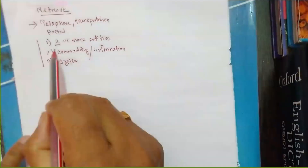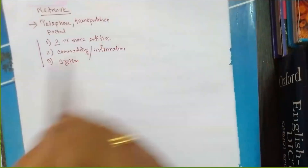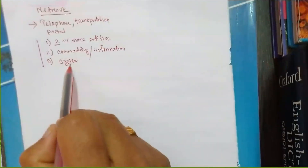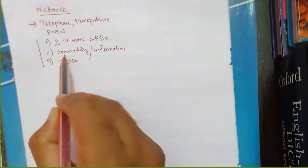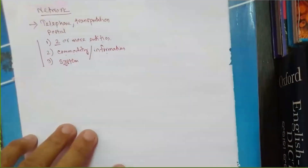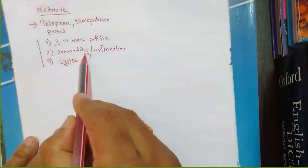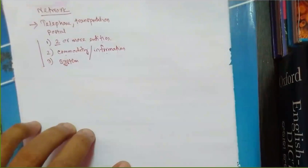The first requirement is there should be two or more entities involved. Second, there should be some commodity or information to send. Third, there must be a system to facilitate this communication. So a network is a system that facilitates the exchange of commodity or information among two or more entities.